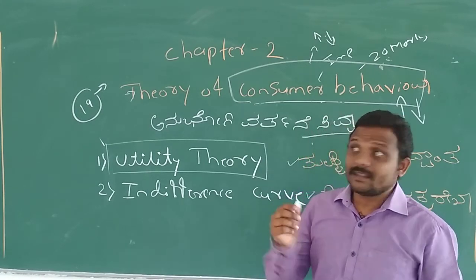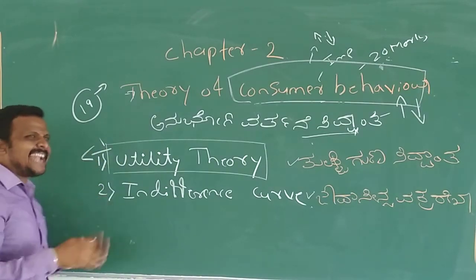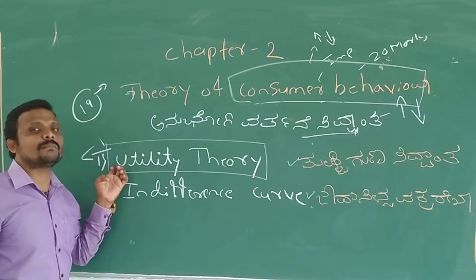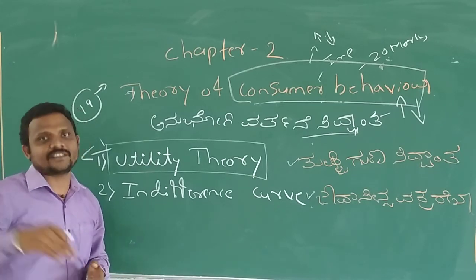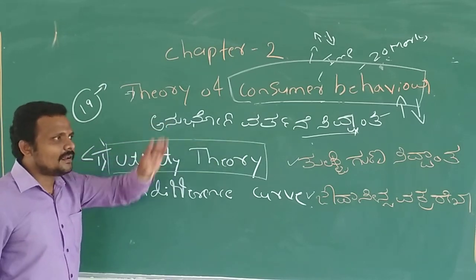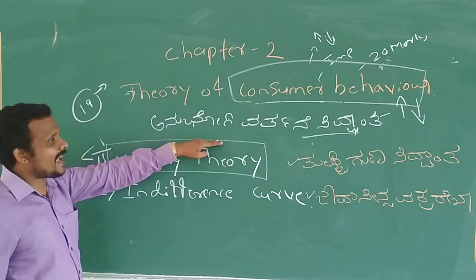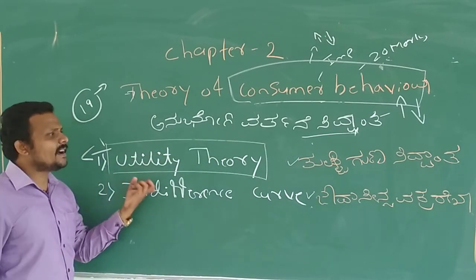But the real theory, the utility theory was scientifically explained by Alfred Marshall, because the real credit goes to Alfred Marshall. The first explanation was by Menger, Walras, and Jevons, but the real credit goes to Alfred Marshall.